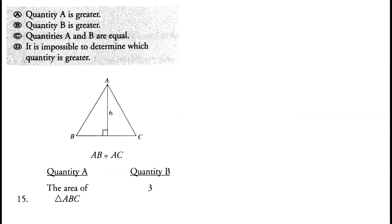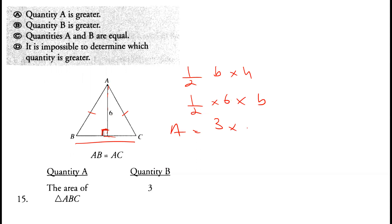A triangle has AB = AC, so it is isosceles. The area formula is (1/2) × base × height. The height is 6, so area = 3 × base. However, the base BC is not specified — it could be 1, 2, 3, or any length. If base is 1, area is 3; if base is 2, area is 6. Since the base is unknown, we cannot determine the area. Option D is correct.